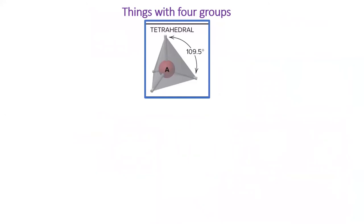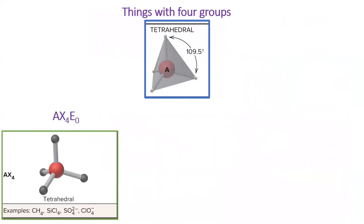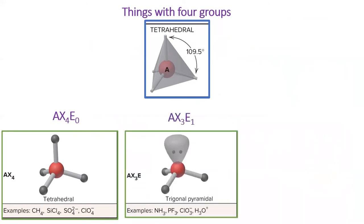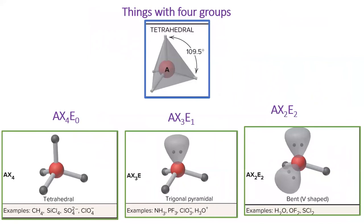Things with four groups have electronic geometry tetrahedral. When all four groups are atoms, the molecular geometry is also tetrahedral. When one of those atoms is replaced with a lone pair, the molecular geometry is trigonal pyramidal, because it looks like a pyramid with a triangular base. When two atoms are replaced by lone pairs, the shape is called bent. This is the shape of the most famous molecule, water.